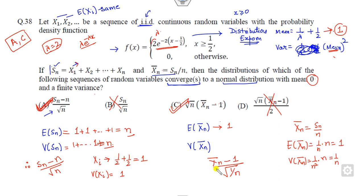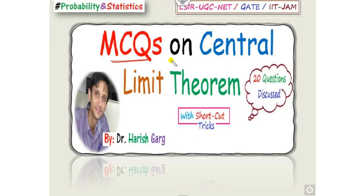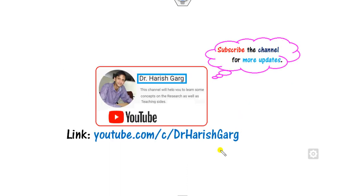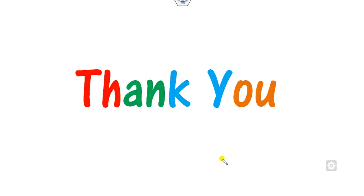This is a very simple trick with which you can easily get two marks in your examination. If you want to see more examples on the Central Limit Theorem, I recommend you follow my previous lectures on MCQs on the CLT, where you can learn how to solve 20 questions with shortcut tricks. In our next class we will see IIT JAM 2020 Mathematical Statistics questions. Till then, follow the link for more videos. Best of luck, students.